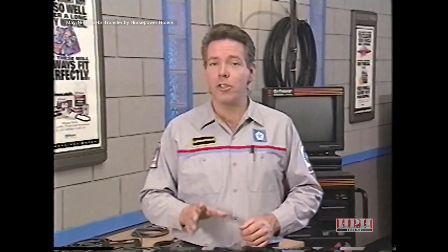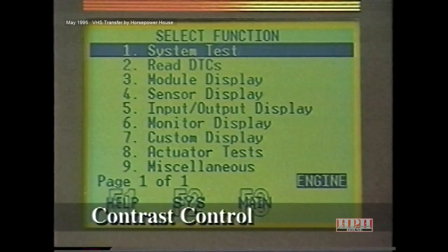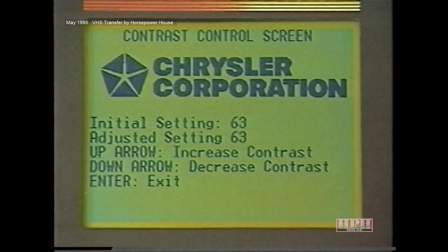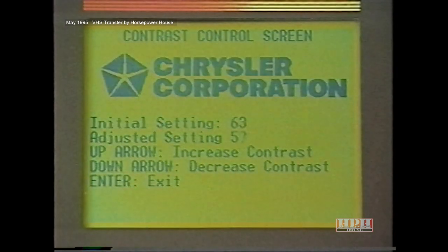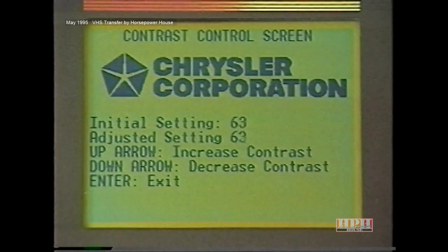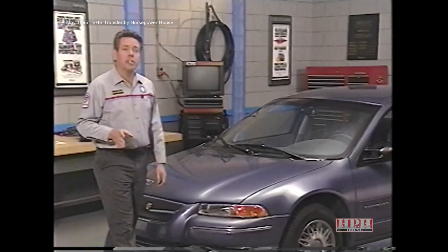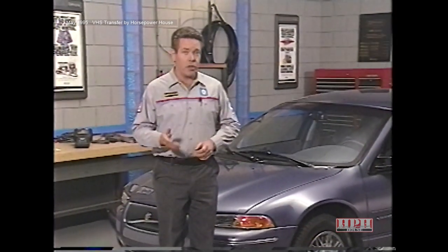There are several user-friendly features that have been added to the DRB3 since its introduction, and other existing features have been updated. Let's take a look at some of these features beginning with Contrast Control. Contrast Control, as you may remember, is not a new feature. When you press the Yes and Page Forward keys simultaneously, you enter the Contrast Control Adjustment screen. Then you can use the up and down arrows to adjust contrast. However, there were some instances where the contrast was adjusted too high or too low, so now Chrysler engineers have installed a contrast check when the DRB3 is powered up.